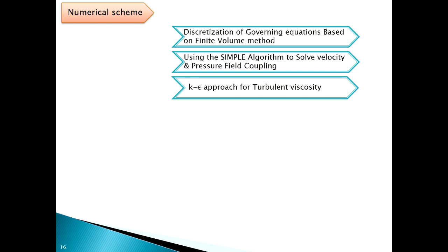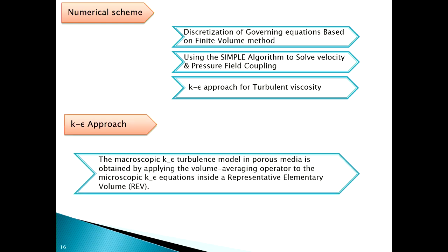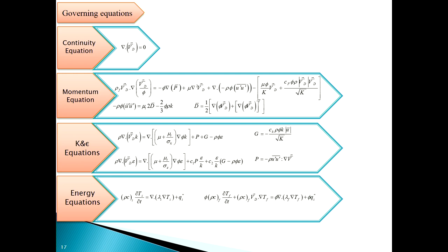The numerical scheme discretizes the governing equations based on the finite volume method, using the well-known SIMPLE algorithm to solve the velocity and pressure field coupling, and using the k-epsilon approach for turbulent viscosity. The macroscopic k-epsilon turbulence model in porous media is obtained by applying the volume averaging approach to the microscopic k-epsilon equations inside a representative elementary volume, noted as REV. The governing equations include continuity, momentum, k-epsilon equations, and the energy equation, with porosity phi appearing in the porous media equations.